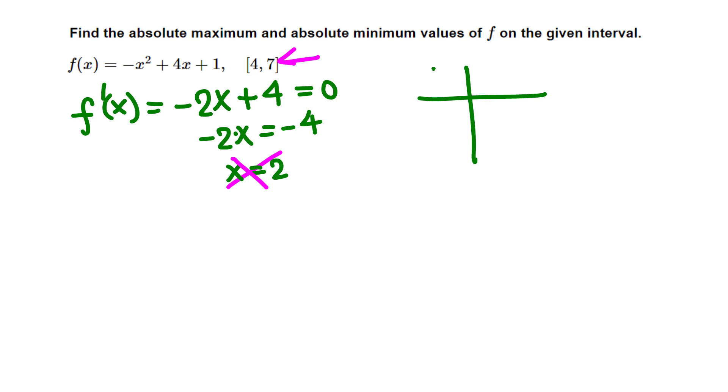Now we evaluate the function at the endpoints which are 4 and 7. Plug in 4 here: negative 4 squared is 16, negative 16 plus 16, plus 1, just 1. Plug in 7 here for x: negative 7 squared, negative 49 plus 28 plus 1, so negative 20.